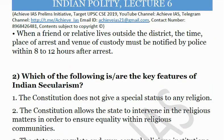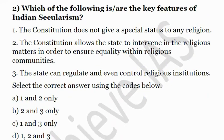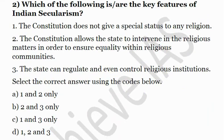The second question: which of the following are key features of Indian secularism? First, the Constitution does not give a special status to any religion. Second, the Constitution allows the state to intervene in religious matters to ensure equality within religious communities. Third, the state can regulate and even control religious institutions. The answer — all three statements are correct. Regarding the first: in India no religion has special status, unlike Pakistan where Islam is given special status, Sri Lanka for Buddhism, or Britain for Christianity.